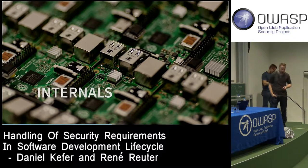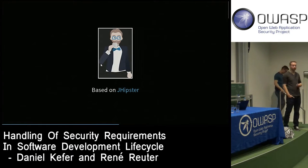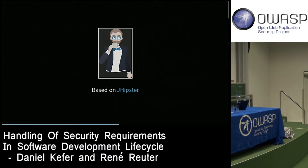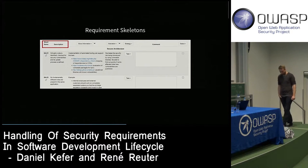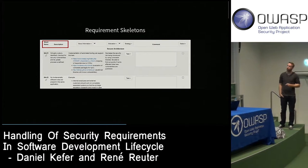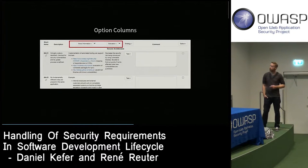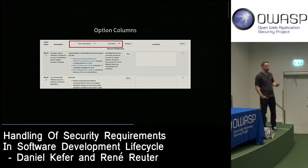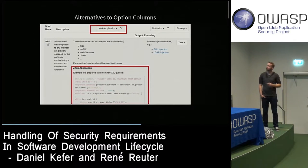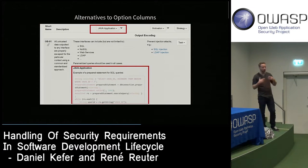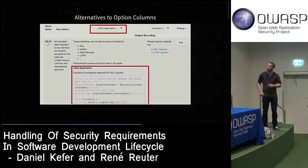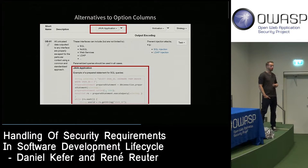Some technical internals: our tool is based on JHipster. Here is the database schema. We have requirement skeletons — just a short name and a description. Based on those skeletons, we have option columns with more information per requirement. You can extend option columns with alternatives — for example, a requirement for SQL injection where I know the project uses Java, so I can add directly in the tool how to use prepared statements to prevent SQL injection.